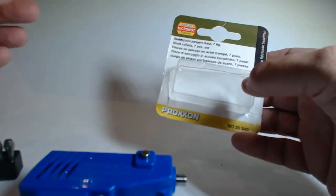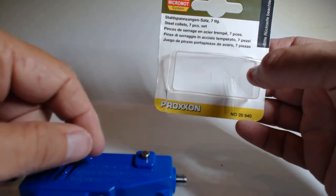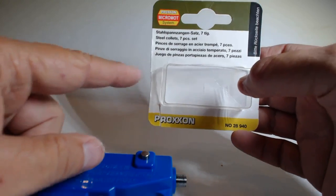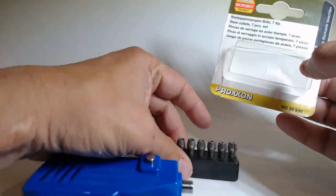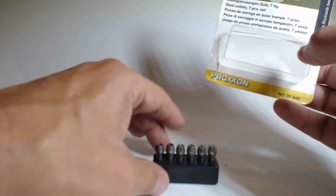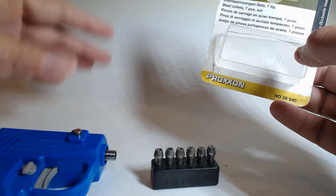This is something that allows you to use more tools. This is by Proxon, this is one of Dremel's competitors. This says a 7-piece set but that includes the holder, so this is the collet right here. These all fit into this drill and obviously your Dremels.